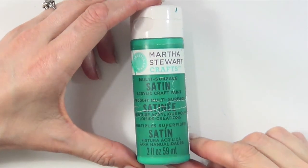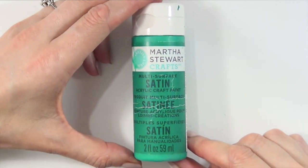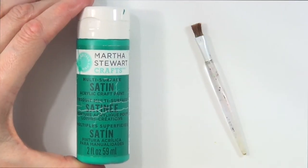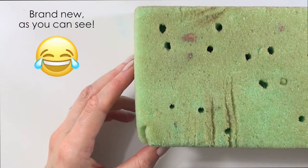And then I'm going to be using this teal acrylic paint. It's satin and it's from Martha Stewart and I like this color a lot. A brush as well. To make this easier, I'm going to be using this block of foam.